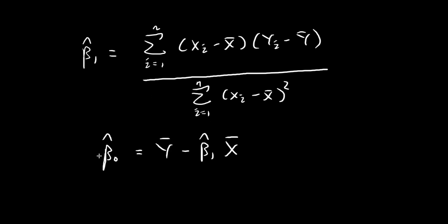We've obtained our formulas for β̂₀ and β̂₁, and what I want to show is that these two formulas are actually unbiased estimators for β₀ and β₁. When we collect all of our data, we can substitute it into these formulas to get actual values for β₀ and β₁. But before we collect our data, the y terms are actually random variables, which means β̂₁ and β̂₀ are also random variables, so we can consider their expected values.